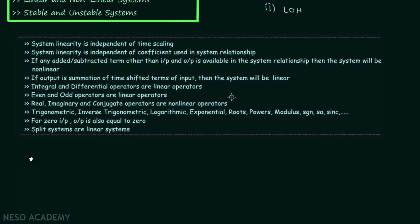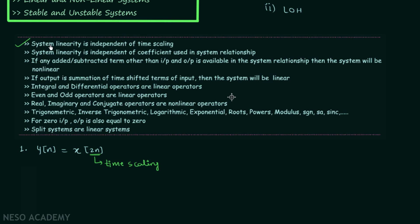In the first example, output y(n) is equal to x(2n). It is clear that we are having time scaling here — the variable n is scaled by 2. If you look at conclusion number 1, it says system linearity is independent of time scaling. Therefore the system in this case is linear, because there is no effect of time scaling on system linearity.